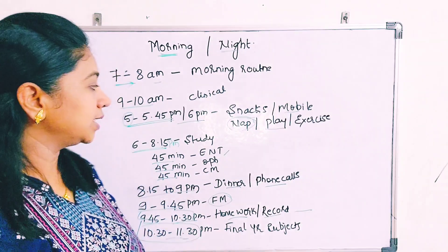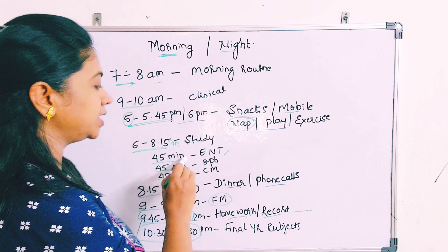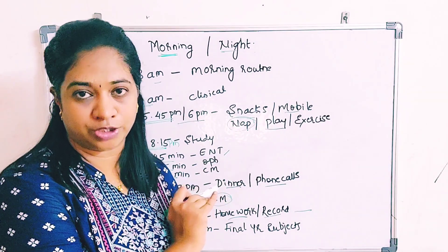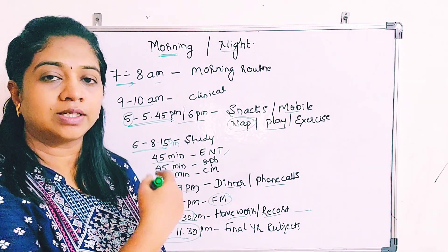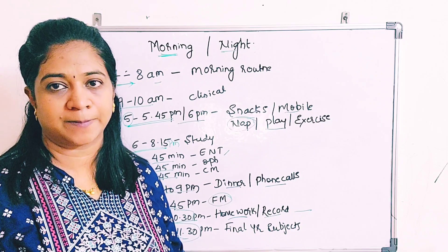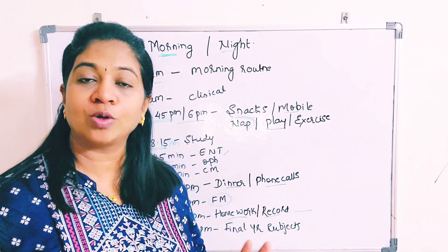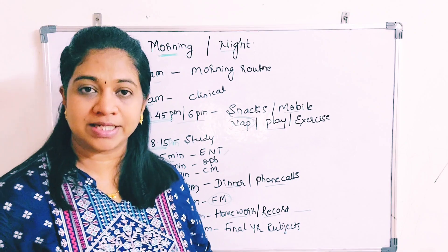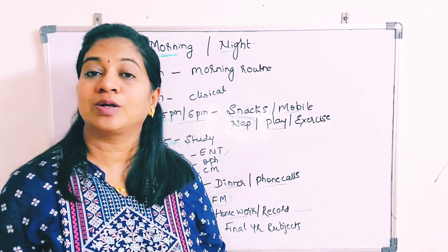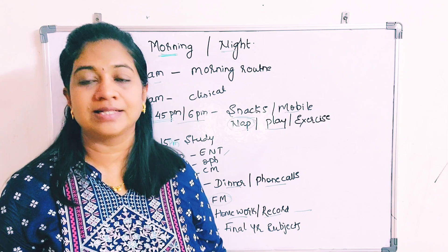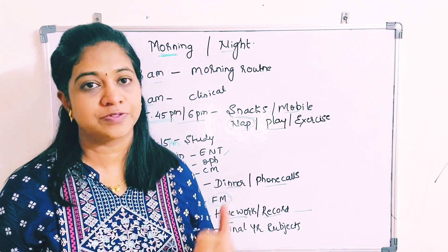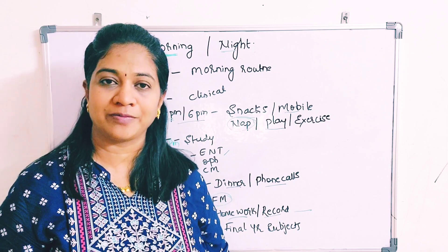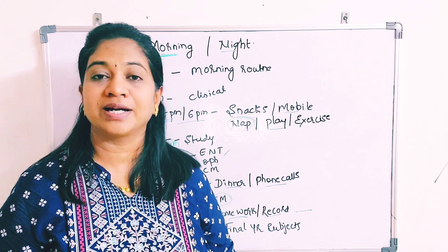In each day's timetable, write which specific topic of ENT and ophthalmology you want to study, so it is easy to implement the next day. To conclude: it is not a whole year you have for third year — practically, it is just six months. And it's not three short subjects — forensic medicine is added, plus final year subjects are also running. Time is very less, so make maximum utilization of the time you have. Study well to succeed. Happy Ganesh Chaturthi to everyone.